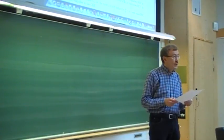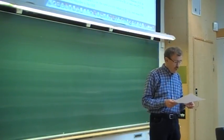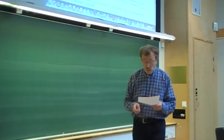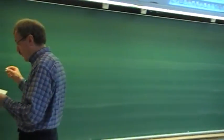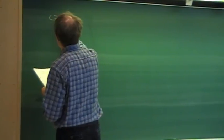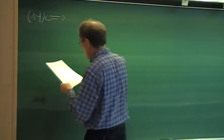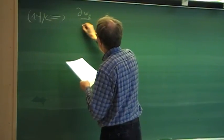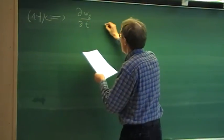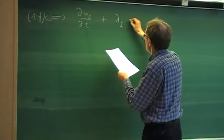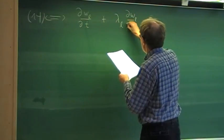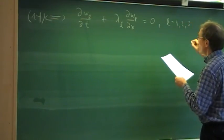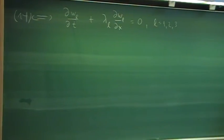We have seen equation 14, where we diagonalized the one-dimensional Euler equations. That is equivalent to the following form: for each component L, dWL/dt plus lambda_L times dWL/dx equals zero. We can see the index L, and that is true for all three indices, so we get three scalar equations of this kind.